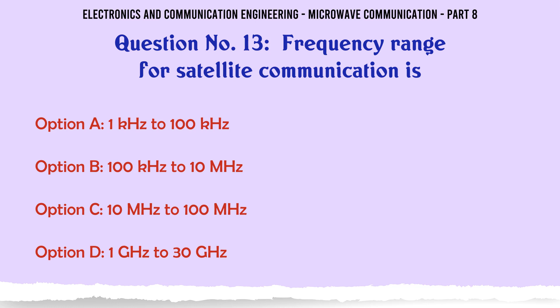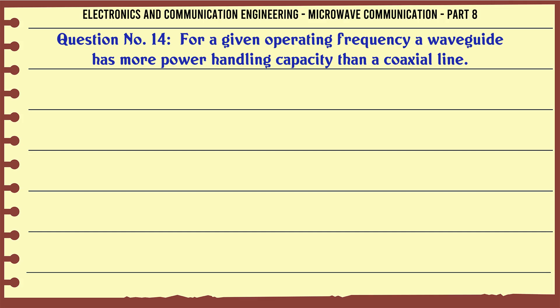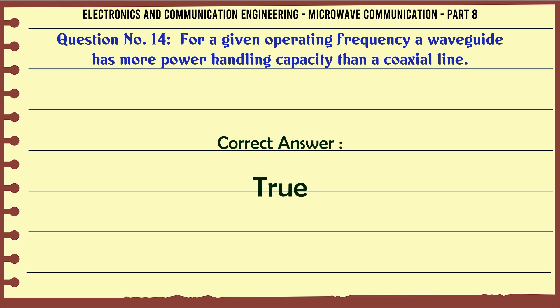The correct answer is 1 GHz to 30 GHz. For a given operating frequency, a waveguide has more power handling capacity than a coaxial line — A. True, B. False. The correct answer is True.